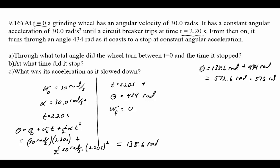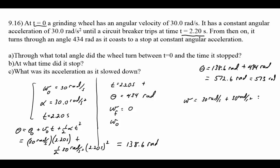To find when it stopped, we need the initial omega at the start of the second half. This omega naught is not the same as the original; it's the omega at the end of the 2.2 seconds. Using omega equals omega naught plus alpha t: 30 radians per second plus 30 radians per second squared times 2.20 seconds, using the constant acceleration equation.